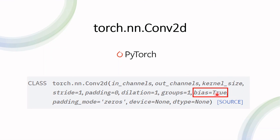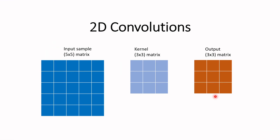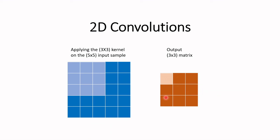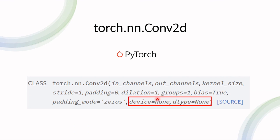The next parameter is bias, which by default is set to true. That means after applying the kernel onto the input sample, a bias is added at the end of the computation — a learned parameter alongside the kernel weights. The last two parameters are the device, specifying whether you're using CPU or GPU, and the data type that you are processing.